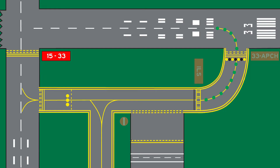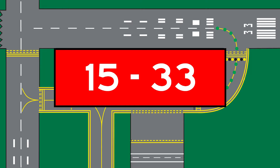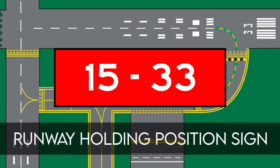The first type is the runway holding position sign. This sign is located at the holding position on taxiways that intersect a runway, or on runways that intersect other runways. The text contains the designation of the intersecting runway, arranged to correspond to the respective runway threshold. For example, '15-33' indicates that the threshold for runway 15 is to the left and the threshold for runway 33 is to the right.